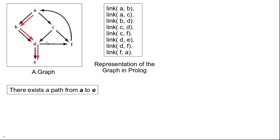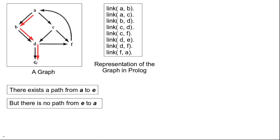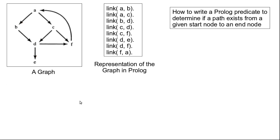As we can see in this graph, there is a path from a to e — from a we can go to b, from b to d, and from d to e. However, there is no path from e back to a. So now how can we write a Prolog program to find out if a path exists between a given start node and an end node?